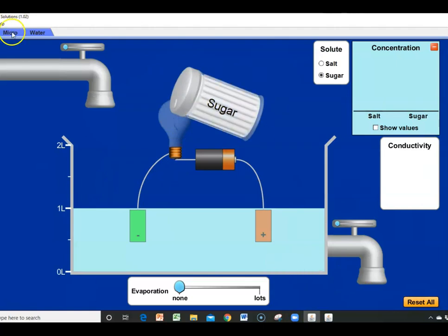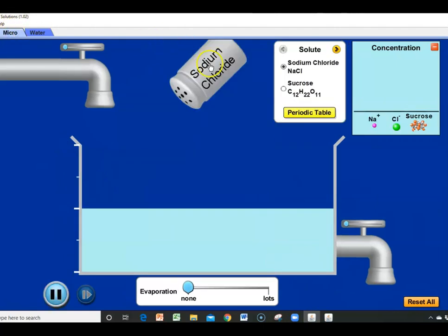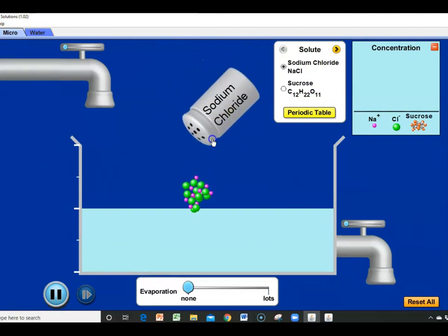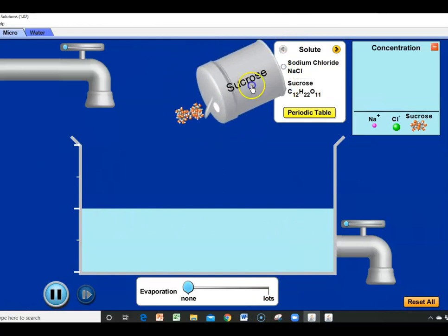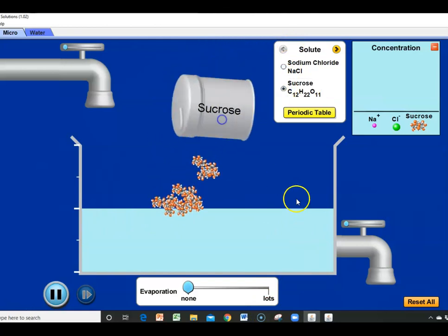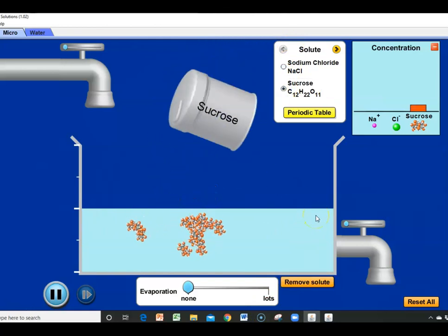So now I'm going to show you what's going on at the micro level. Here's my sodium chloride. When the sodium chloride hits the water, you'll notice I get free ions. Those free ions are able to conduct electricity. Whereas if I put in sucrose, you will notice because it's covalently bonded, it doesn't come apart. So that is a major difference.